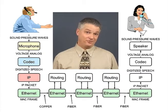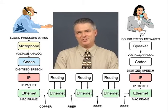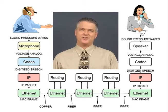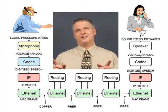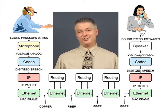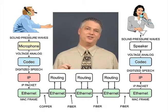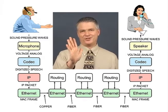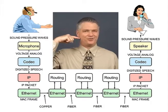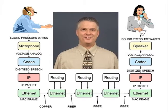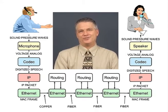At the far-end telephone, it's a LAN device, so it brings in the LAN frame, extracts the packet, and gives it to the IP software running on the IP phone. That extracts the 20 milliseconds worth of compressed digitized speech out of the IP packet and gives it to the codec in the far-end telephone. The codec turns that back into a voltage analog, which drives a speaker whose diaphragm moves back and forth, creating sound pressure waves that travel down the person's ear canal and cause neurons to fire up to the central processing part of the brain.